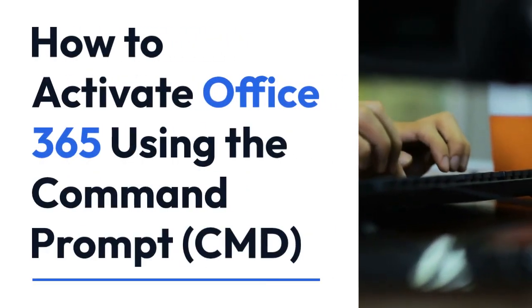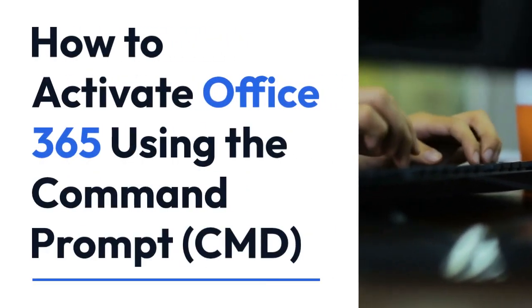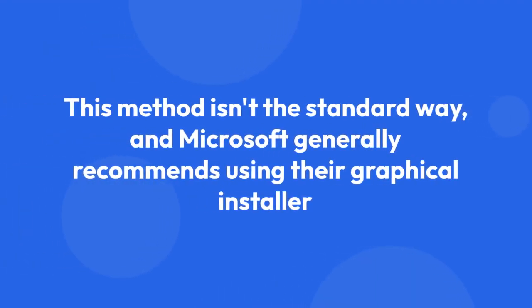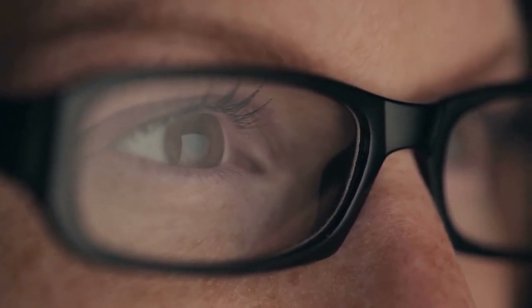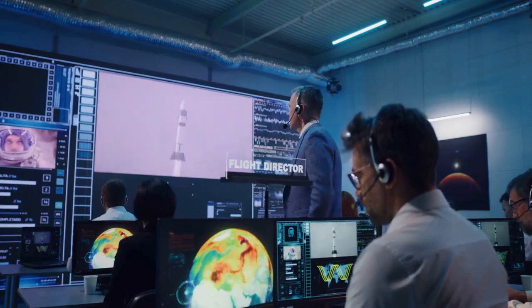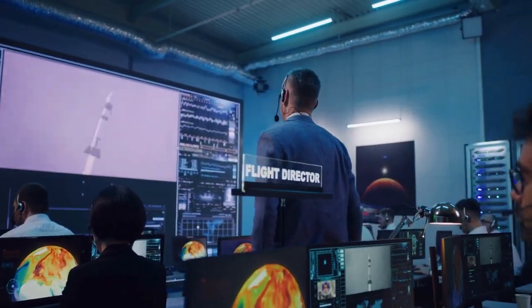We're going to explain how to activate Office 365 using the command prompt, CMD. This method isn't the standard way, and Microsoft generally recommends using their graphical installer, but it's useful to know, especially for troubleshooting or automation. Keep in mind that this method requires you to already have the Office 365 installer downloaded and ready. You'll also need administrative privileges to run the CMD commands. Let's get started.